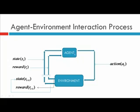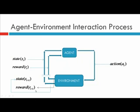At a particular step t, the agent finds itself in state st with reward rt due to action at-1, forming the input. On the basis of this input, the agent selects action at and transitions to state st+1, receiving reward rt+1. This then forms the input at step t+1, where the agent selects action at+1, finds itself in state st+2, and receives reward rt+2. This continuous process is known as the agent-environment interaction process.